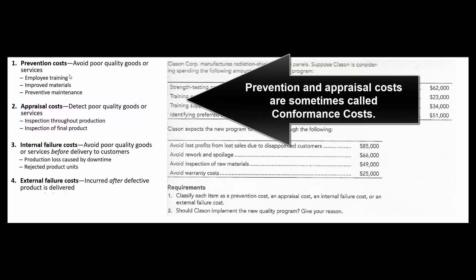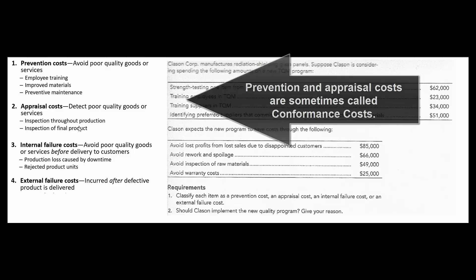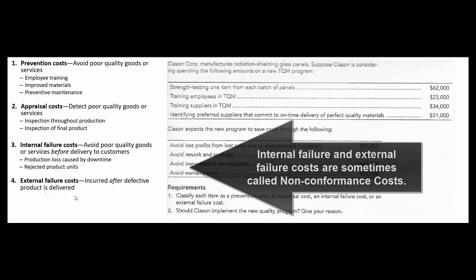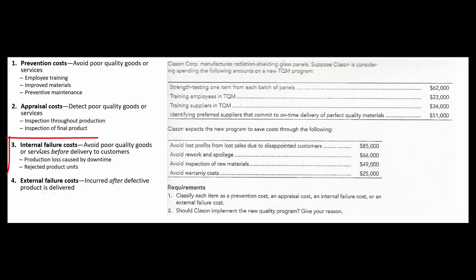Prevention costs and appraisal costs are called conformance costs because they're money we spend to try to get our stuff to conform to what we want it to be. Internal failure costs and external failure costs are called non-conformance costs because the stuff didn't turn out as good as we liked — maybe we had to shut machinery down, or we had rejected product units that we had to rework or scrap.